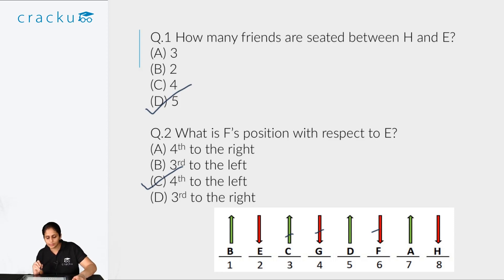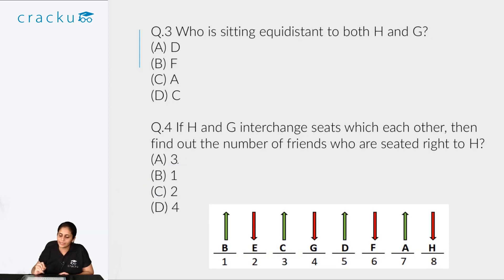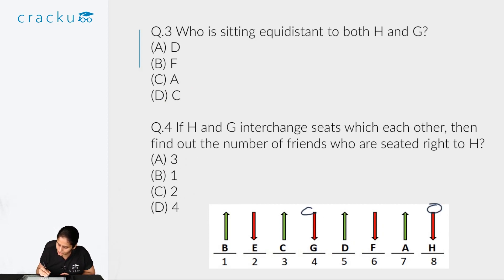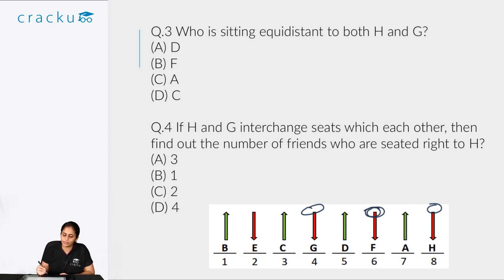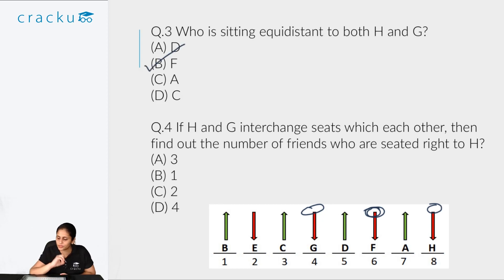The third question asks who is sitting equidistant from both H and G. We can see that H is at position 8 and G is at position 4, and F at position 6 is in the middle. So F is seated equidistant from H and G, and the right answer is option B.